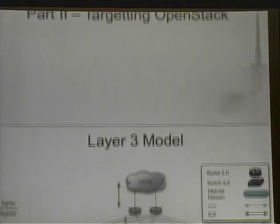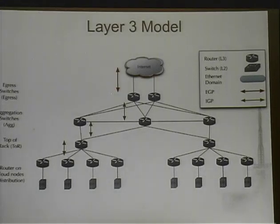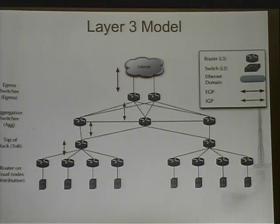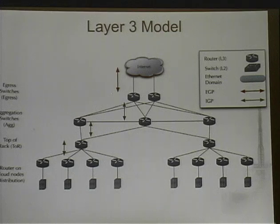Now onto the fun part — actually attacking OpenStack. I'll go through three basic tiers of how you would see a deployment, since every deployment is different. The first is a layer-three model, which is what my company uses. By layer three, I mean there's still layer-two isolation, but the isolation for user instances is done at layer three via standard TCP/IP routing. Switches operate as layer-three routers, ensuring packet paths aren't shared as much as in a non-routed model.